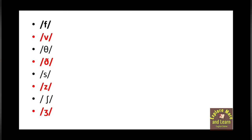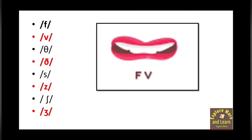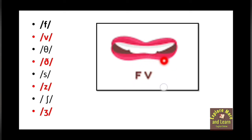A partial blockage is created when we pronounce these fricative sounds, and the air is released through a narrow passage. For example, when we pronounce /f/ or /v/, there is a partial blockage between the two articulators. That means air is partially blocked — not completely blocked — and that blockage is created between the lower lip and the upper teeth.